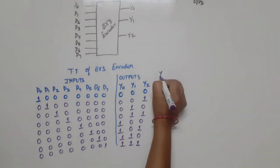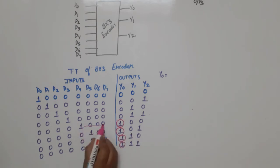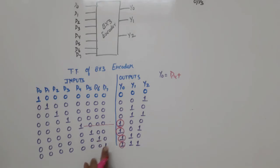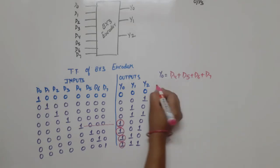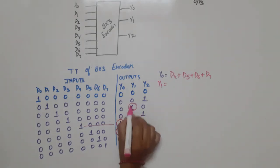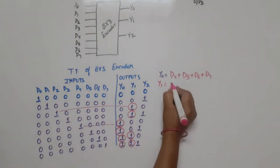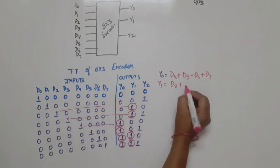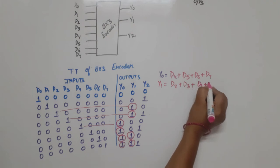Now, if we write Y0, it is high when: checking the truth table — positions 1, 2, 3, 4 — this is D4. So Y0 equals D4 plus D5 plus D6 plus D7. For Y1, checking positions 1, 2, 3, 4 — Y1 equals D2 plus D3 plus D6 plus D7.